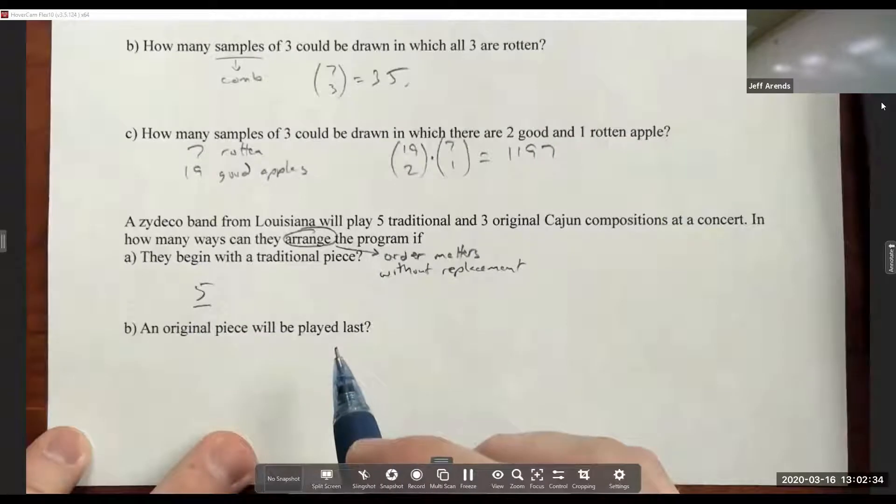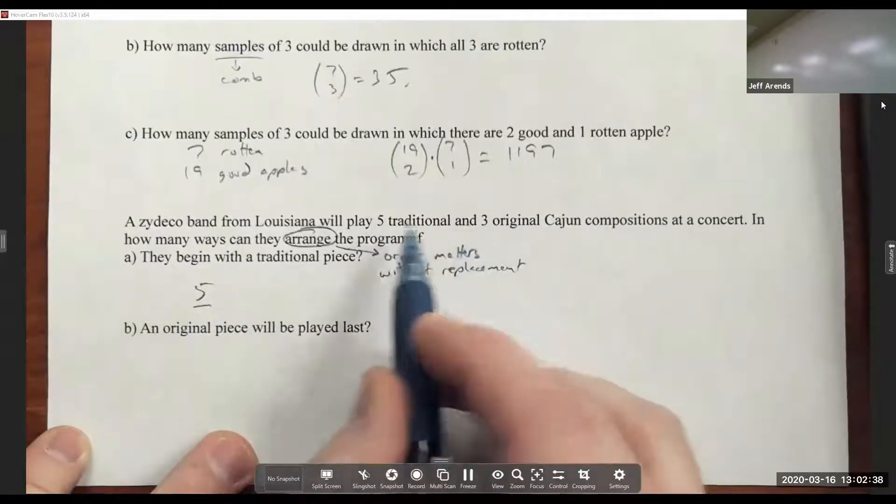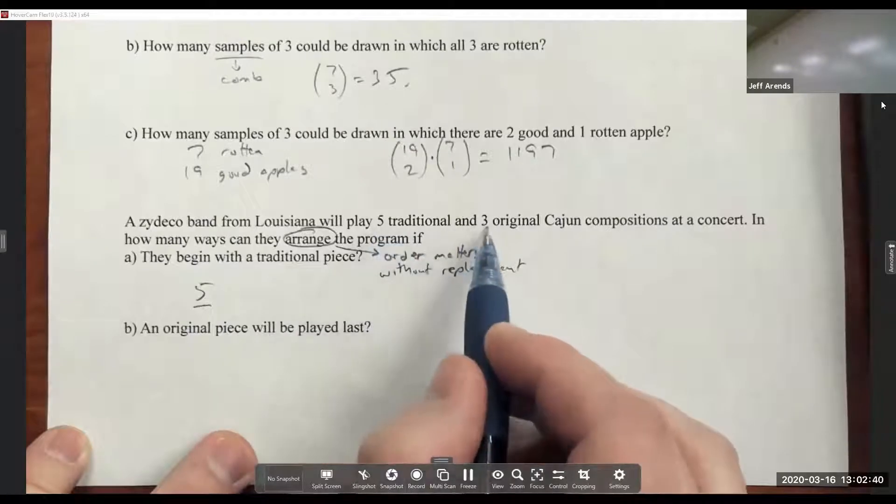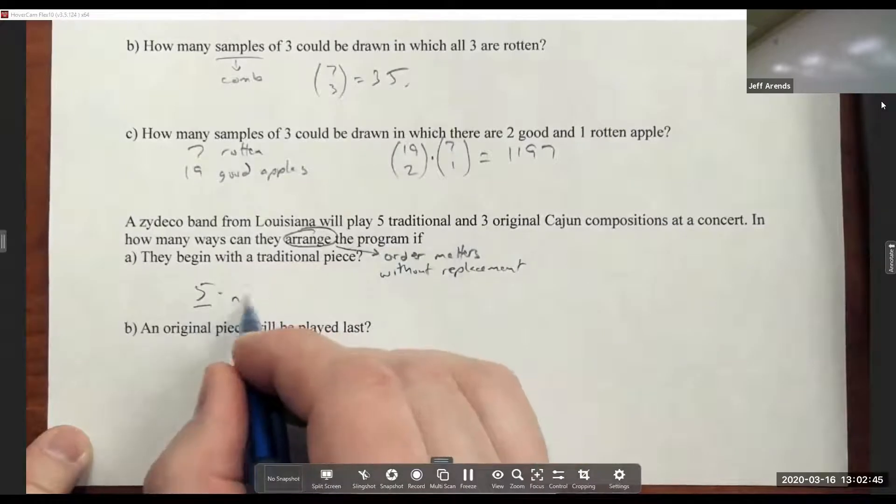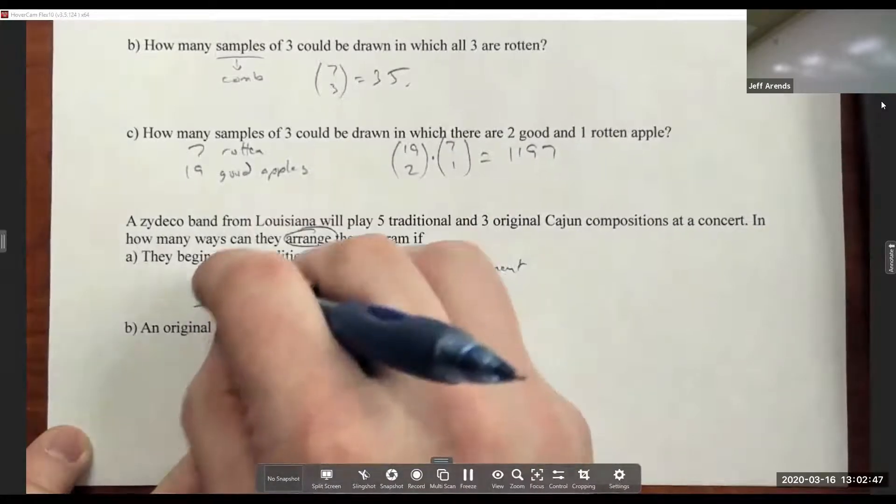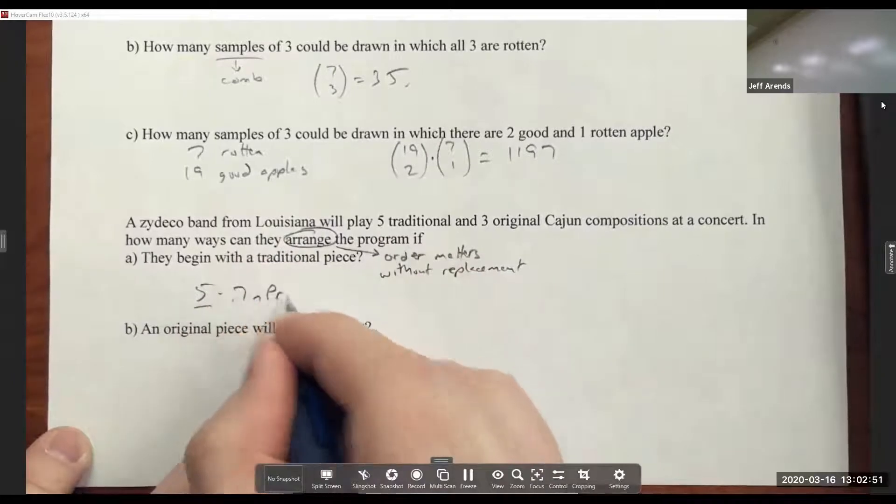Yeah, that's the only requirement. It looks like there are seven remaining songs, four plus three, because they've already played one of the traditional songs. And so I would say the ways they could play their remaining songs would be seven permute seven or seven factorial.